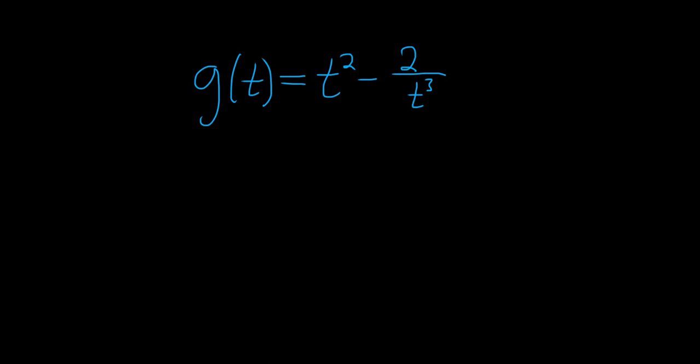So the t squared is okay, so let's go ahead and rewrite what we have. So g of t, we still haven't taken the derivative, we're just rewriting. So t squared minus, and what you can do with this piece is you can bring it upstairs. And when you do that, the exponent will become negative. This will actually become 2, and then t to the negative 3. Really important strategy when you're learning how to take derivatives.